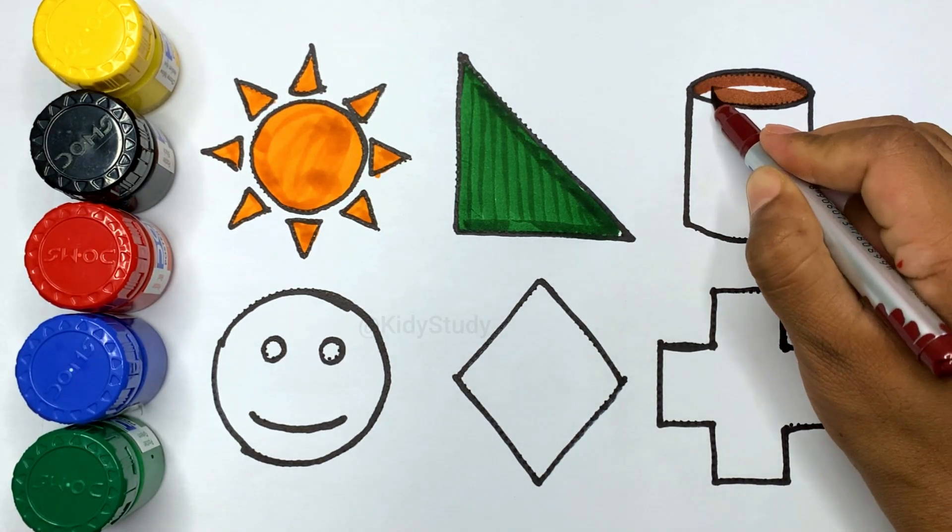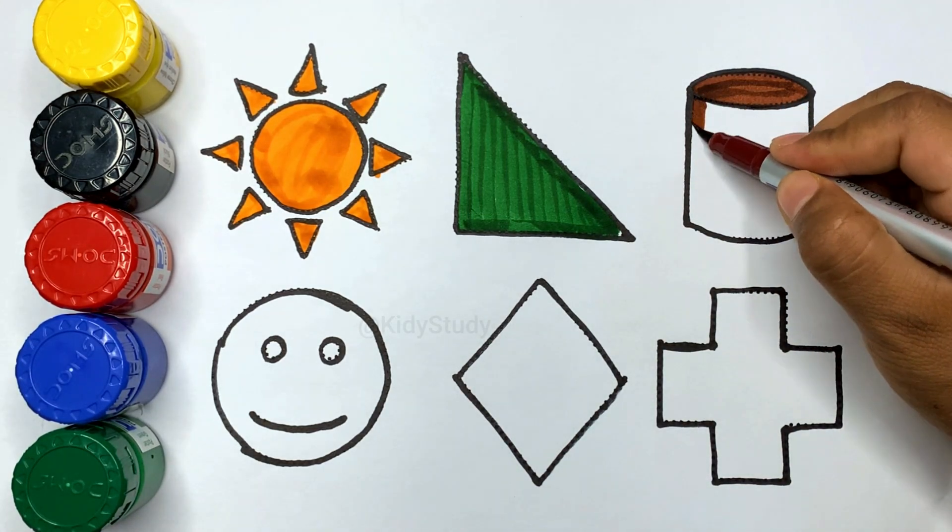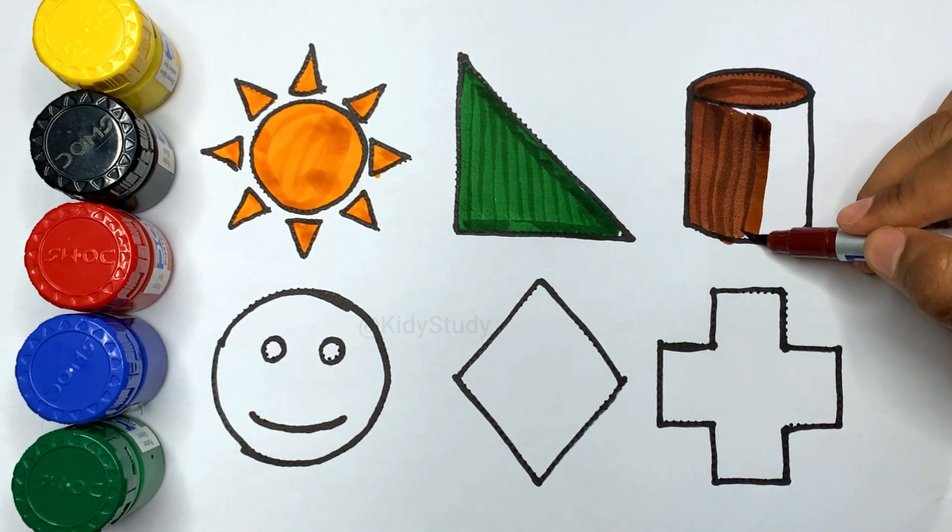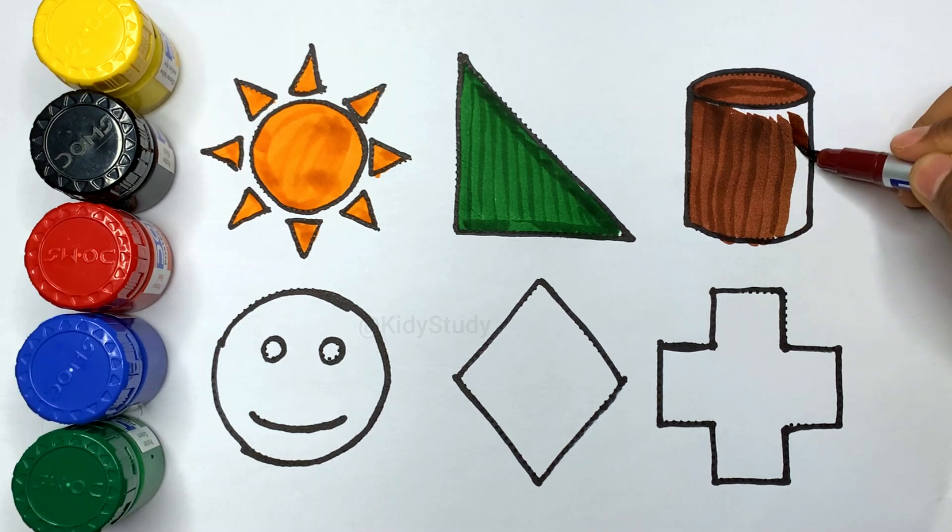Brown color. Here is a cylinder. Here is a cylinder. कौन सा shape kids? Here is cylinder.